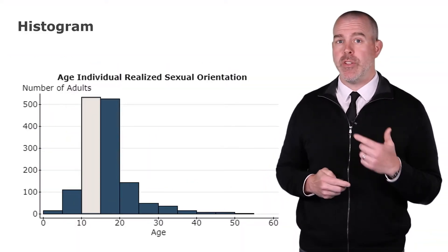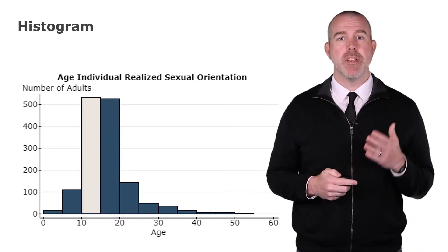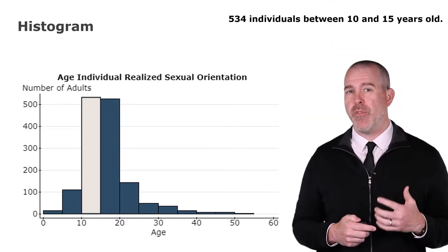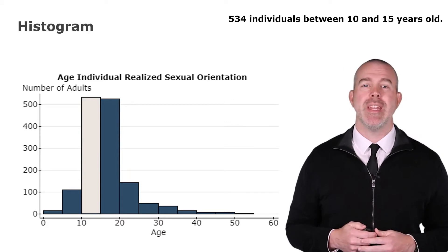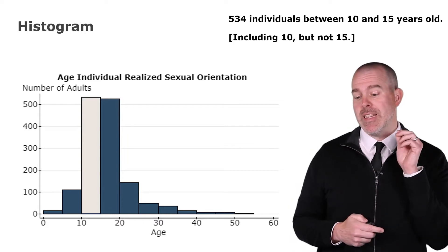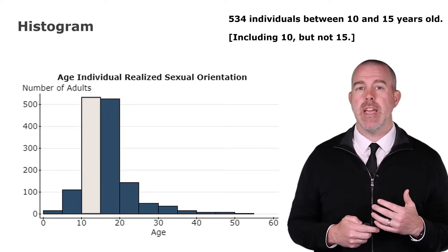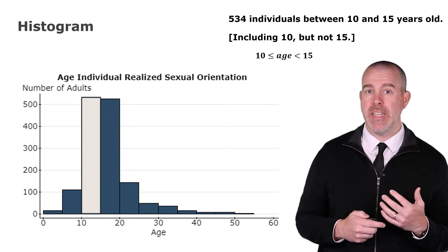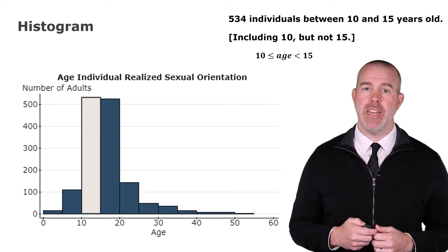What those boxes mean — let's look specifically at one, the third box. It's between 10 and 15. What it specifically means is there are 534 individuals who recognized their sexual orientation between the ages of 10 and 15. Specifically, this includes 10 but not 15. If you think of an inequality, this would be 10 ≤ age < 15. So 10 is included but 15 is not.